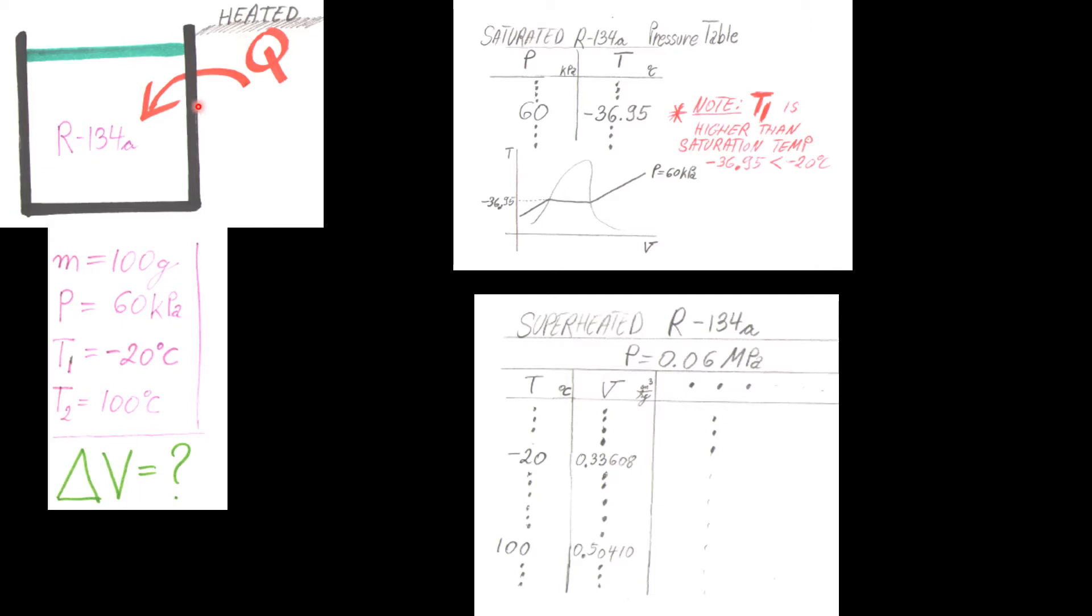We're going to be heating it from negative 20 to 100°C and our job is to find the change in volume. We're going to go to the saturated pressure table of R-134a. We're going to go to the pressure and find 60 kilopascals.